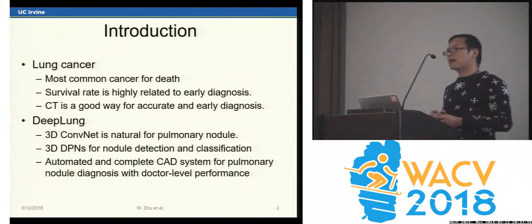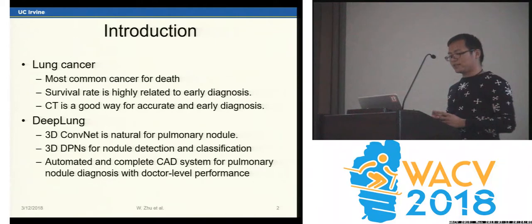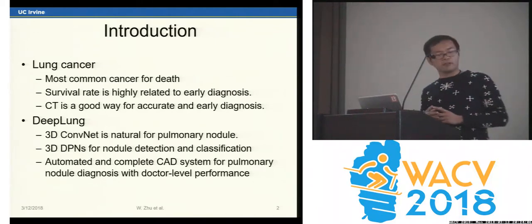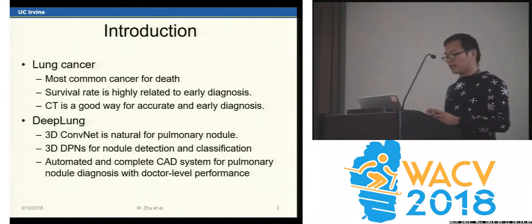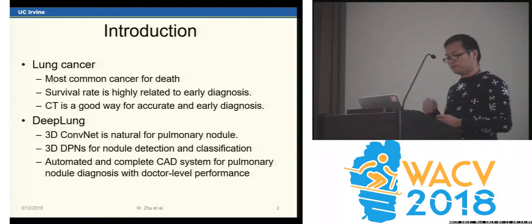To reduce the number of parameters in the three-dimensional convolutional network, we design two three-dimensional dual path networks for nodule detection and classification respectively.